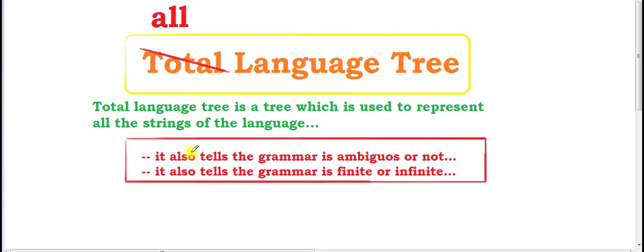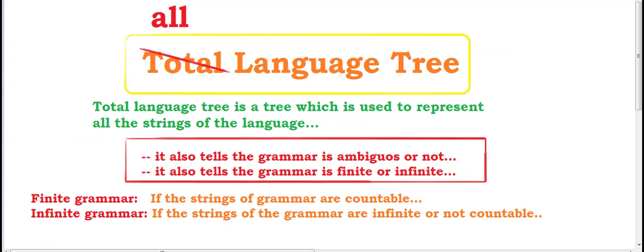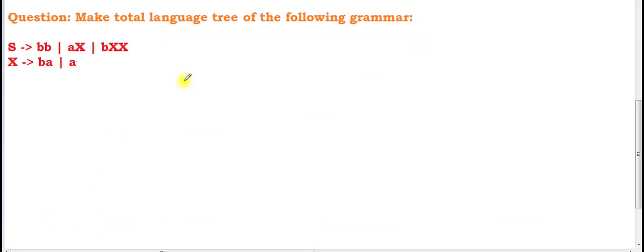Furthermore, a total language tree also tells us whether the grammar is ambiguous or not, and whether the grammar is finite or infinite. If the strings of the grammar are countable, the grammar is known as finite grammar. If the strings are infinite or not countable, then the grammar is known as infinite grammar.